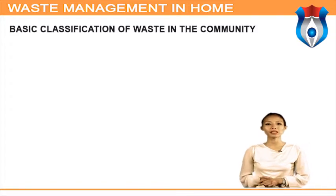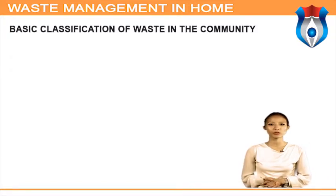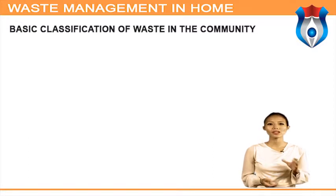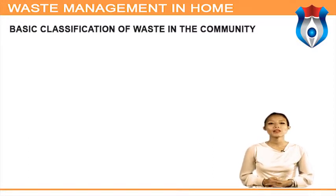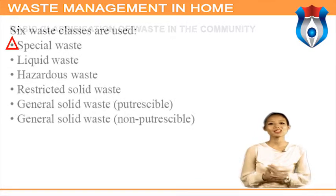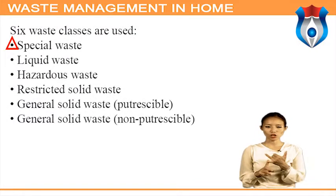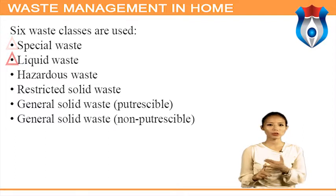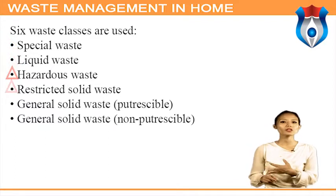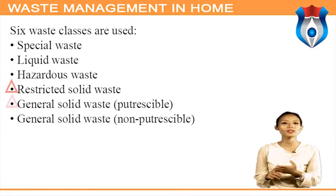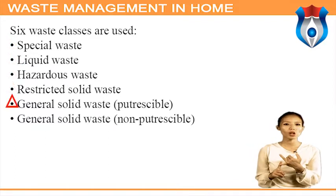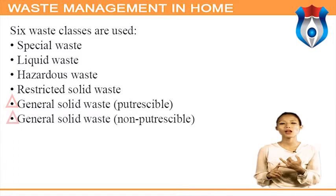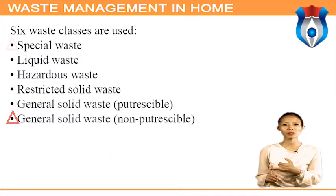Moving on to the basic classification of waste in the community: classifying waste into groups that pose similar risks to the environment and human health facilitates management and appropriate disposal. Six waste classes are used: special waste, liquid waste, hazardous waste, restricted solid waste, general solid waste putrescible, and general solid waste non-putrescible.